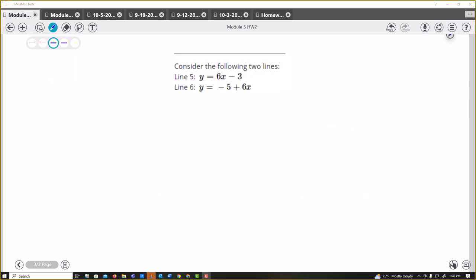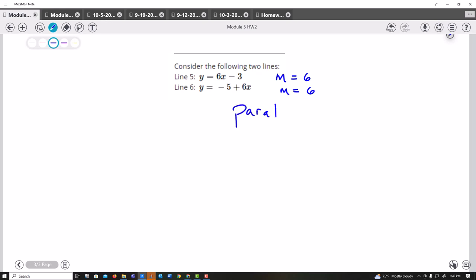Now I have another one. There's lots of parts to this one, but I'm only doing a few parts. So looking here, they've already solved this. So m equals 6 and m equals 6. Remember, when you have the same slopes, then line 5 would be parallel to line 6.